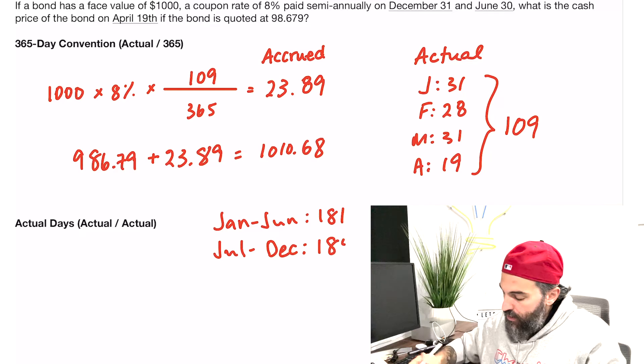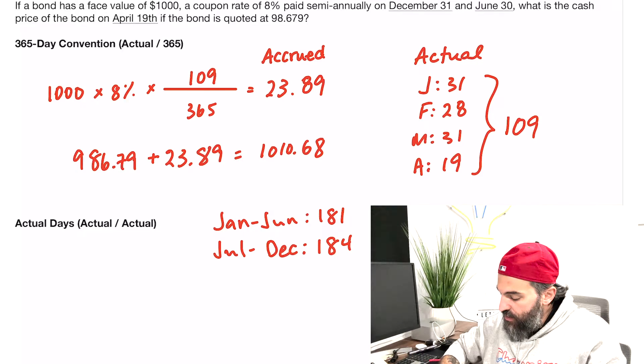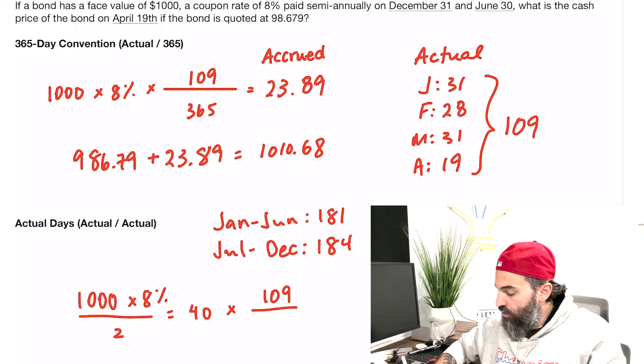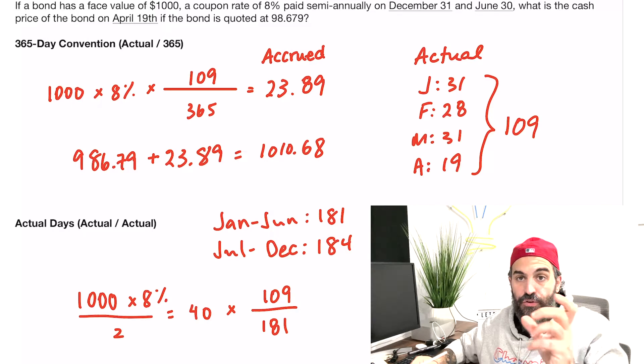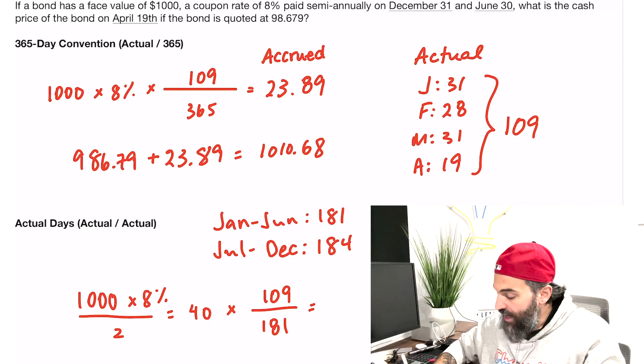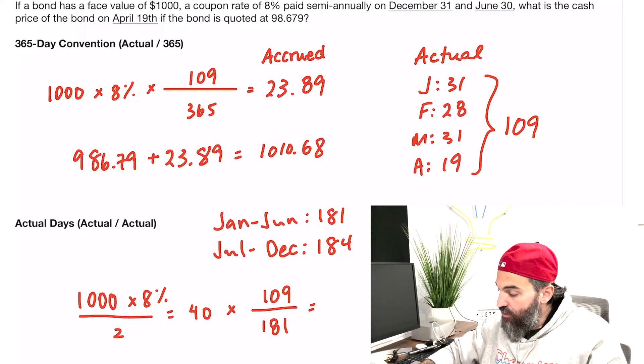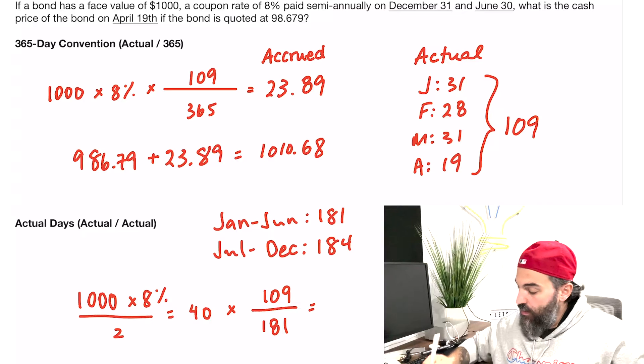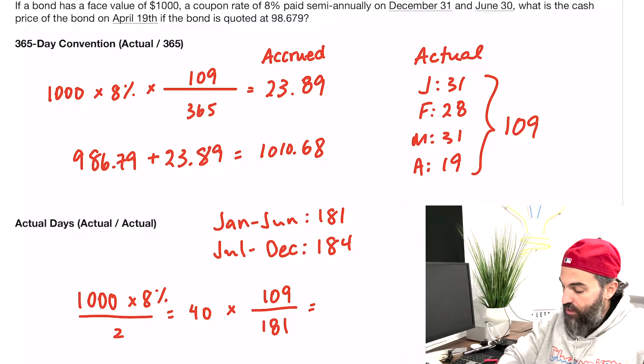In this case, you'd calculate the coupon payment: $1,000 times 8% divided by 2 because it's semi-annual—that's $40—multiplied by actual over actual. Since we're in April, we're in the first half of the year, so the actual number of days between December 31st and June 30th is 181.